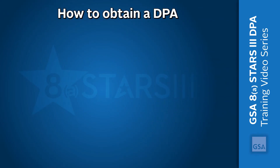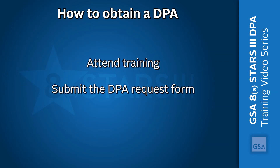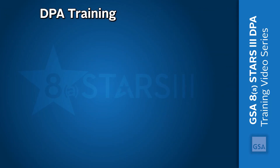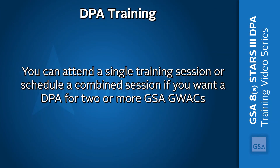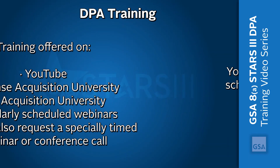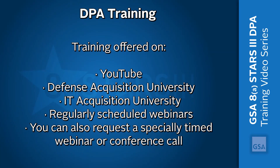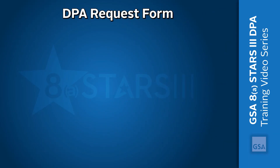In order to obtain a DPA, you must attend training, such as this video course, and submit the DPA request form. You can attend a single training session or schedule a combined session if you want a DPA for two or more GSA GWACs. DPA training is offered online via YouTube, the Defense Acquisition University, IT Acquisition University on the Acquisition Gateway, and via regularly scheduled webinars. You can also request a specially timed webinar or conference call.